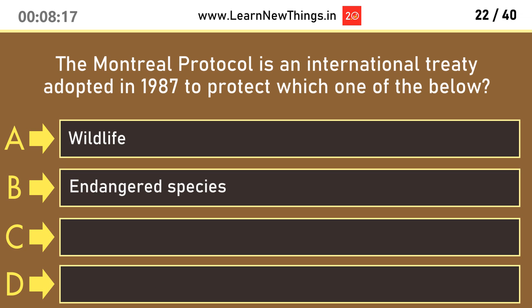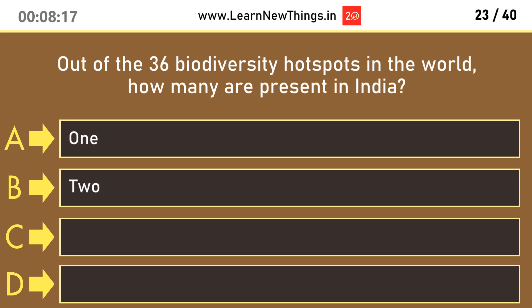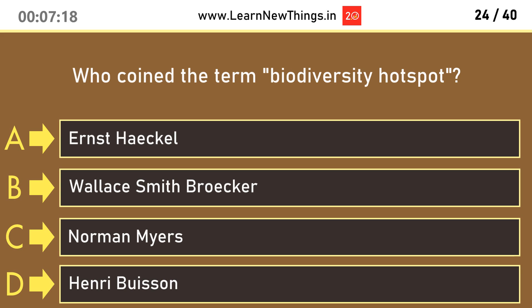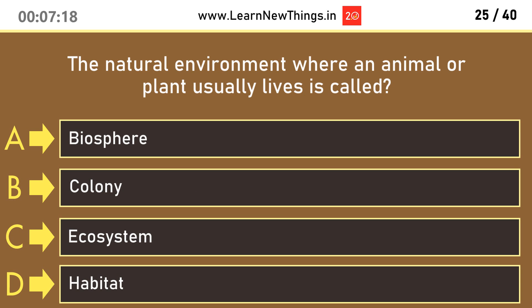The Montreal Protocol is an international treaty adopted in 1987 to protect which one of the below? Ozone Layer. Out of the 36 biodiversity hotspots in the world, how many are present in India? 4. Who coined the term Biodiversity Hotspot? Norman Meyers. The natural environment where an animal or plant usually lives is called Habitat.